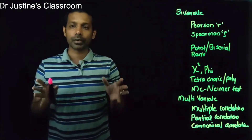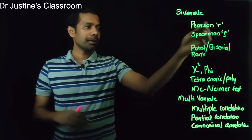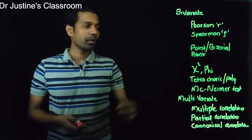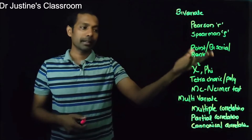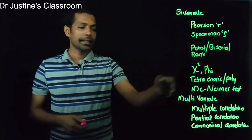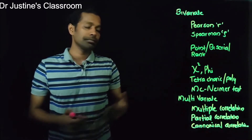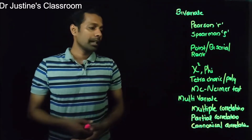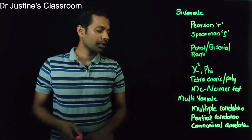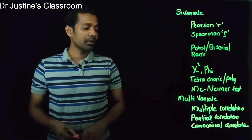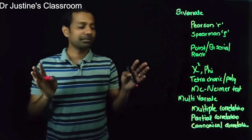What are the statistics we are going to discuss today? Basically the application. You have Pearson r — called Pearson product-moment correlation — Spearman rank correlation, point biserial correlation, biserial correlation, rank correlation, chi-square test, phi correlation, tetrachoric, polychoric correlation, McNemar test. Under multivariate analysis you have multiple correlation, partial correlation, and canonical correlation. These are the different types of correlation analysis.